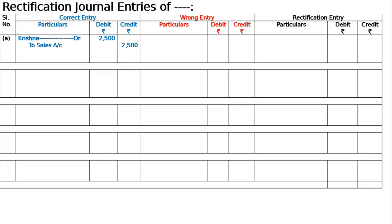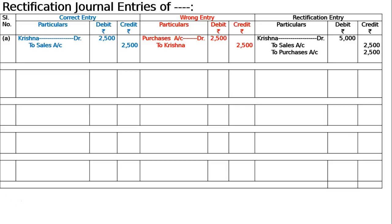By mistake it was passed through the purchases book, so the wrong entry was purchases account debited to Krishna, 2500. To rectify, we write the correct entry: Krishna debited to sales, 2500. Purchases account is to be credited to nullify its wrong debit. And credit Krishna in the wrong entry is to be debited to cancel it — so Krishna is debited 5000 in total. Thus, goods sold to Krishna wrongly passed through purchases book has been rectified.